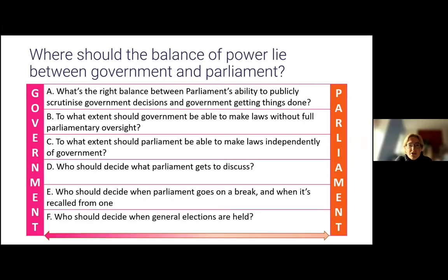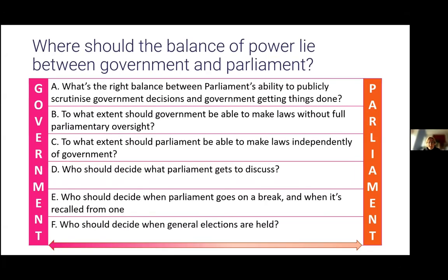On Question A — the balance between scrutiny and bogging government down — government undoubtedly has a big and complicated job to do, and it's not desirable for parliament to intervene in every decision. But we do need to ensure parliament has enough opportunity to scrutinize government, because better scrutiny makes for better government. If parliament doesn't get the chance to ask the right questions, possible flaws in government's plans won't be identified and rectified, and there's more chance that government will be able to avoid awkward questions about things that have already gone wrong.